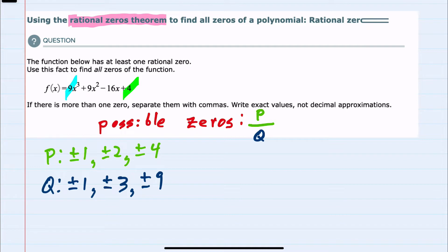And so to find all of the possible p's over q's, I can start with 1 over 1, which would be plus or minus 1. Other possible denominators would be 3, that would give us plus or minus 1 over 3, and 9, giving us plus or minus 1 over 9.